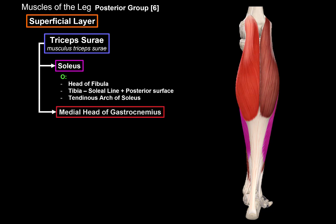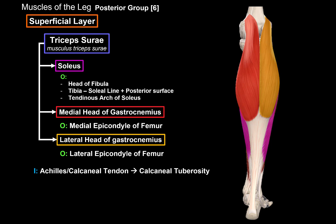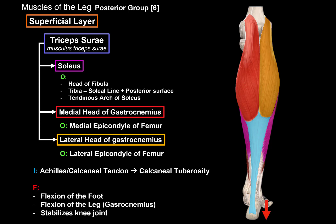The other two parts of the triceps surae are located superficially to the soleus: the medial head of the gastrocnemius, which originates at the medial epicondyle of the femur, and the lateral head of the gastrocnemius, which originates at the lateral epicondyle of the femur. It then inserts at the Achilles tendon, or calcaneal tendon, which further inserts at the calcaneal tuberosity. The main function is flexion of the foot, and the gastrocnemius muscles also flex the leg and help stabilize the knee joint.